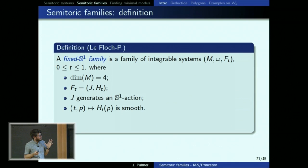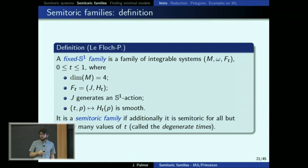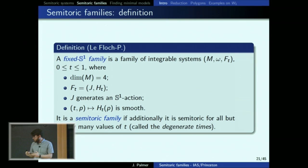With this in mind, we make a definition essentially generalizing the coupled angular momenta. A fixed-S^1 family is a family of four-dimensional integrable systems where the momentum map has a fixed S^1 action, and the other integral changes smoothly with parameter t — just like the coupled angular momenta. A semi-toric family is one of these where the system is semi-toric for all but finitely many values of t, where transitions happen at what are called degenerate times.